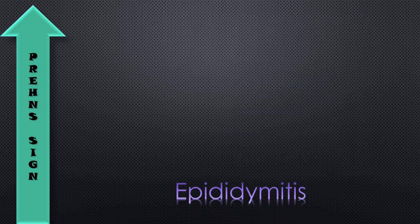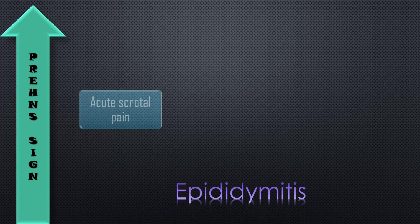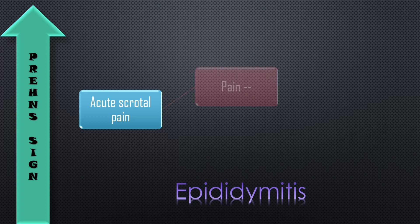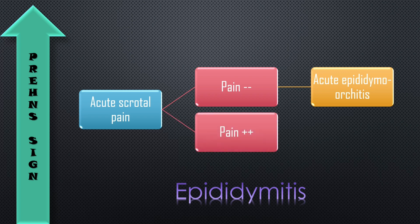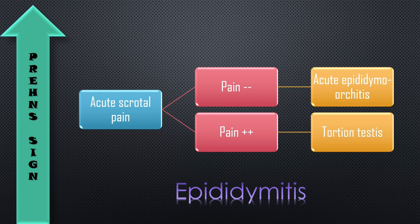The next one is the Prehn sign, seen in epididymitis. This sign is used to differentiate conditions presenting with acute scrotal pain. If you elevate the scrotum and the pain reduces, that indicates acute epididymo-orchitis. If the pain gets worse on elevation, that indicates testicular torsion. So the Prehn sign is positive in epididymitis — pain reduces with scrotal elevation.